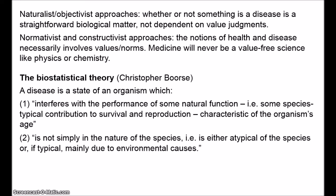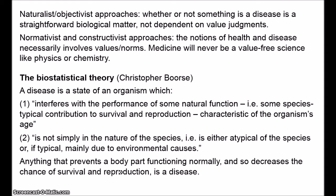The basic idea here is normal functioning with respect to survival and reproduction. Anything that prevents a body part functioning normally, where this reduces one's chances of survival and reproduction, is a disease. And this is a simple statistical matter. If you want to know whether a certain body part is diseased, we just look at what that body part does in the general population. Kidneys work by removing waste from the blood, so if your kidneys aren't removing as much waste from the blood as average, then we can say that your kidneys are diseased.